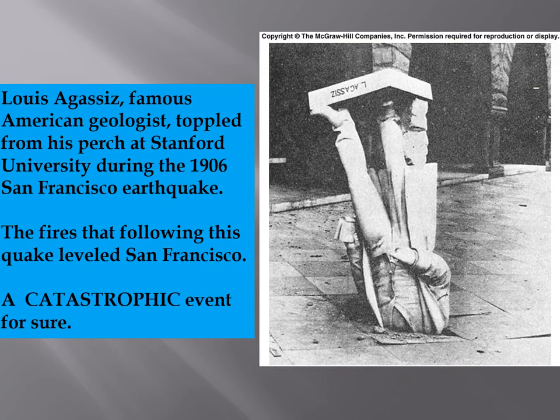Agassiz, who was also a famous geologist, toppled from his perch at Stanford University during the 1906 earthquake, preceding the fires that followed the quake which leveled San Francisco. They never put Agassiz's statue back up in the same place it fell from.